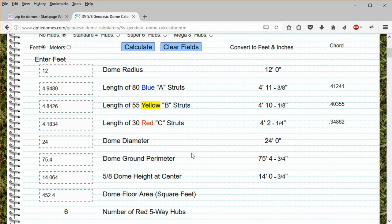Note that this is the only geodesic dome calculator on the internet that converts the number of feet in a decimal format into feet and inches down to 1/8 of an inch. All the other calculators will only give you the length of the blue struts at 4.9489 feet, not 4 feet 11 and 3/8 inches.